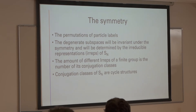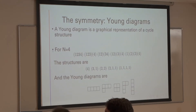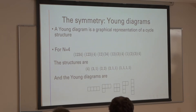The irreducible representations of a finite group correspond to the number of its conjugacy classes. The conjugacy classes of the permutation group are its cycle structures. For the N equals 4 case we have representatives of its cycle structures, and these correspond to Young diagrams. A Young diagram is a graphical representation of a cycle structure — here we have 4, it corresponds to this one; here we have 3+1, this corresponds to this one; etc.